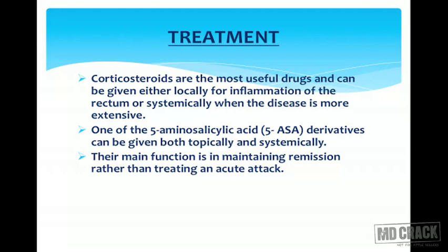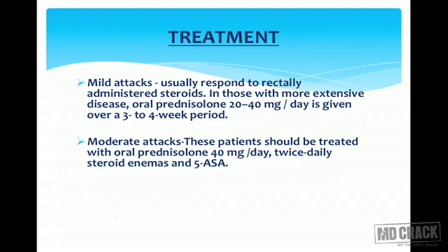Corticosteroids are the most useful drugs and can be given locally for inflammation of the rectum or systemically when disease is more extensive. 5-aminosalicylic acid derivatives can be given both topically and systemically; their main function is maintaining remission rather than treating the acute attack. In mild attacks, rectally administered steroids are used. In moderate attacks, oral prednisolone 40 mg per day, twice daily steroid enemas, and 5-ASA are given.